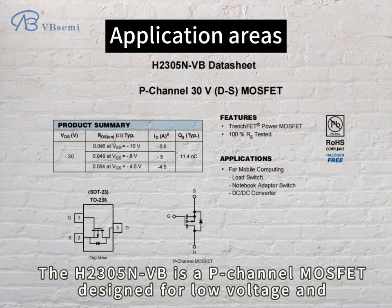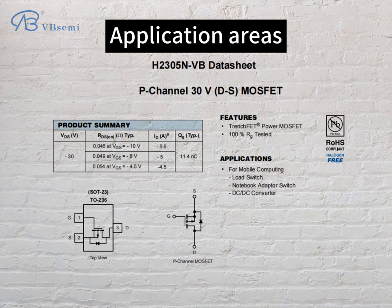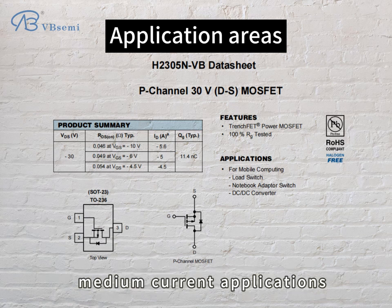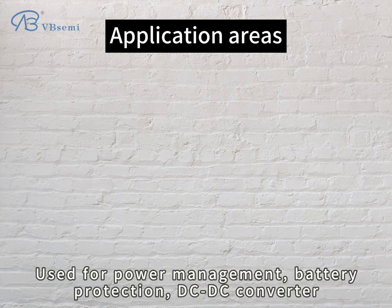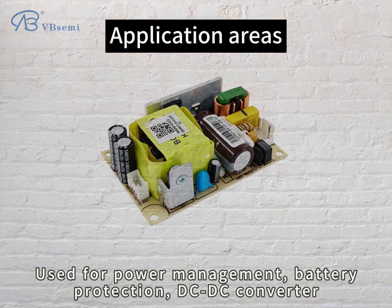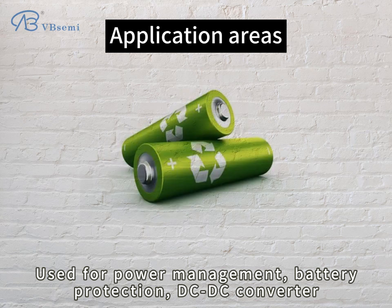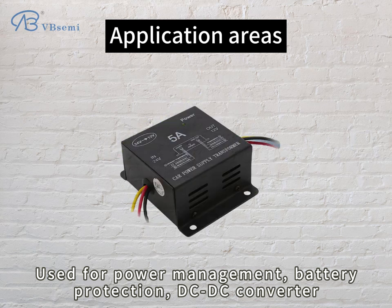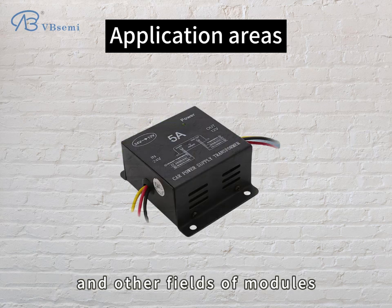The H2305-NVB is a P-Channel MOSFET designed for low voltage and medium current applications, used for power management, battery protection, DC-DC converter, and other fields.